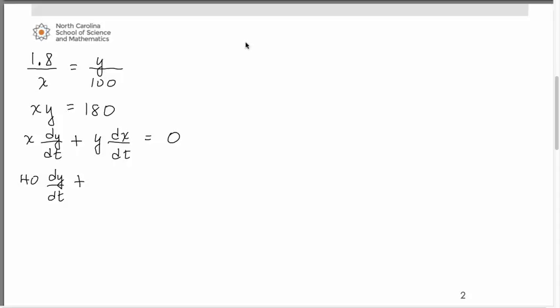So to find the Y, we're going to go back to the proportion we set up. And we're going to put, in place of the X, the 40. So we'd have 1.8 over 40 equals Y over 100. And that's going to allow us to solve for Y at this particular point in time in which X is 40. So if you go ahead and do that, let you try it on your own, you should get that Y is 4.5 if you want to give it a shot.